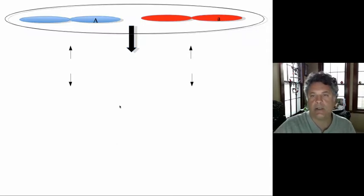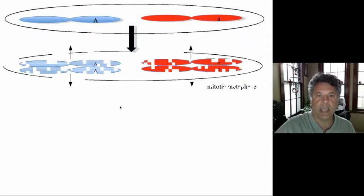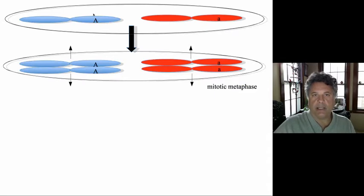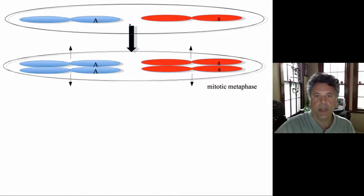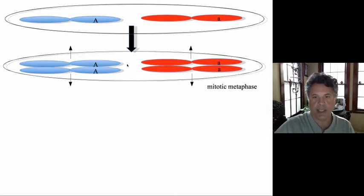First, let's tackle mitosis. Here we have a pair of homologous chromosomes — one chromosome bearing the large A allele and one bearing the small a allele. These are homologues, so this would be a heterozygous individual: big A, little a heterozygote. As mitosis proceeds, we have mitotic metaphase in which the replicated chromosomes line up on the metaphase plate, and then anaphase, telophase, and cytokinesis.